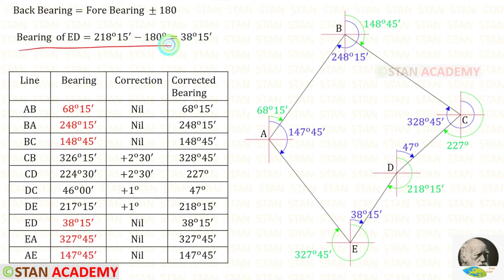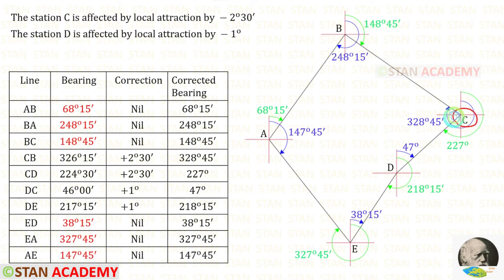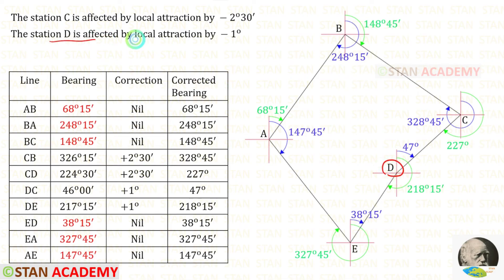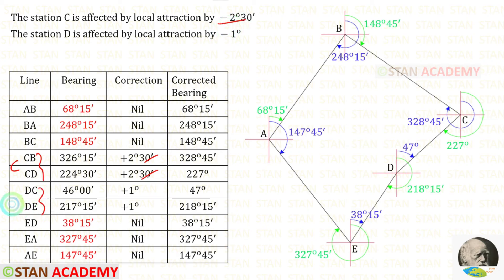This calculation serves as a check. Station C is affected by local attraction by negative 2 degrees 30 minutes, and station D is affected by local attraction by negative 1 degree. At station C, the correction is positive so the error is negative. Similarly at station D, the correction is positive so the error is negative.